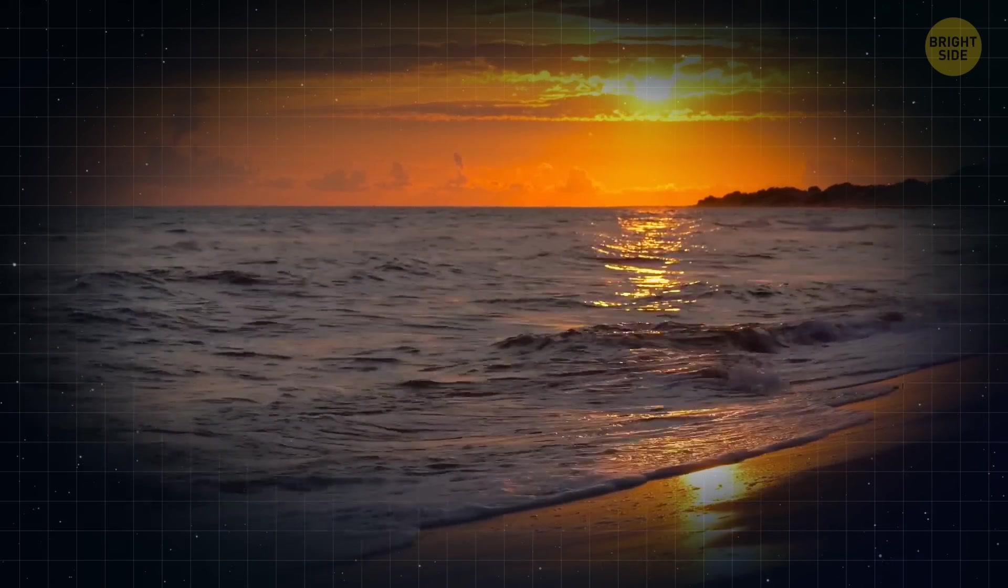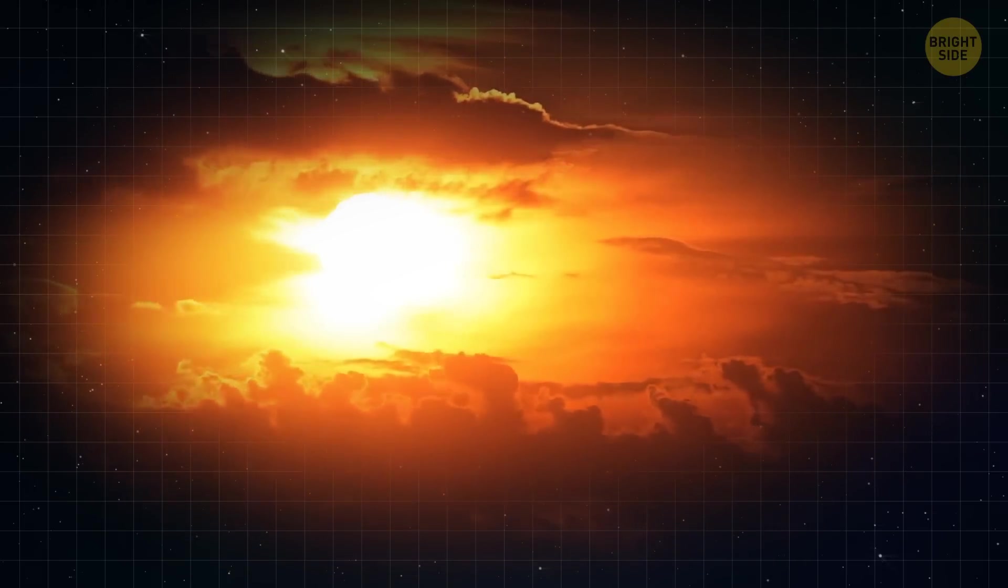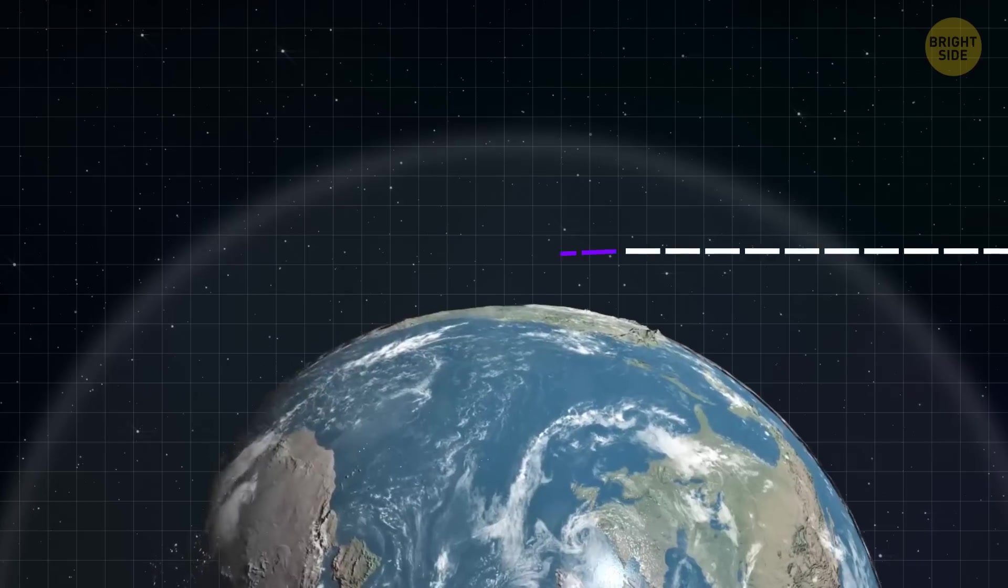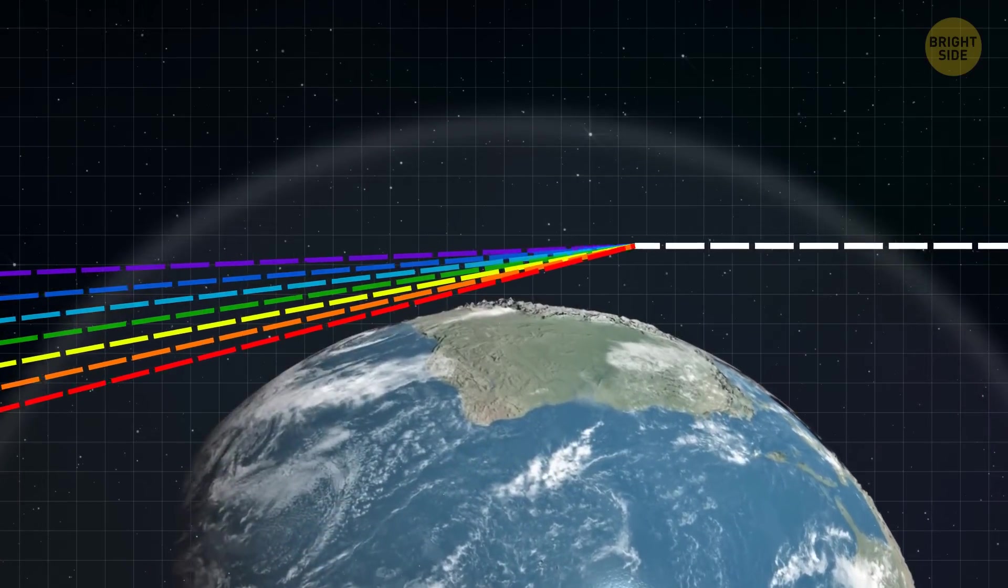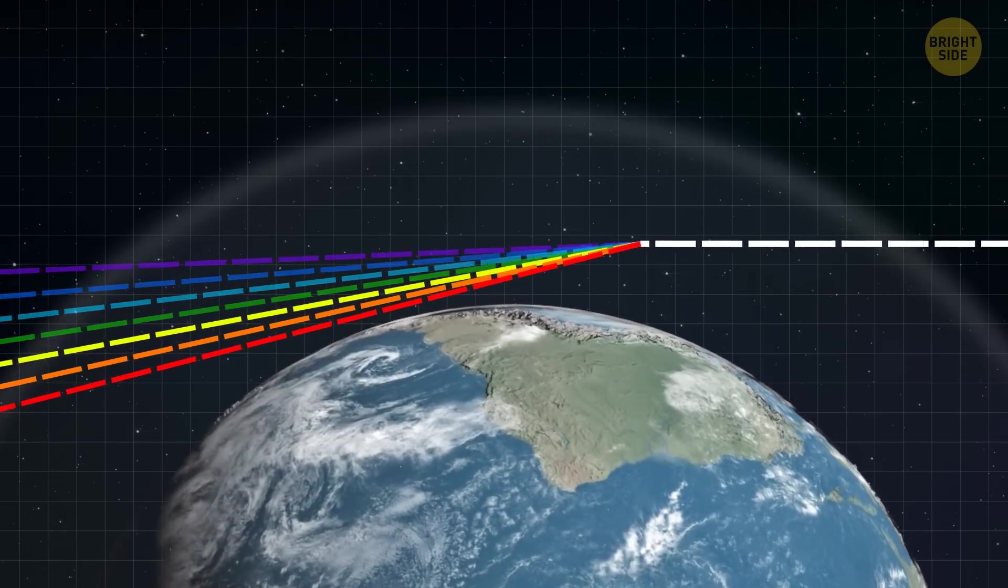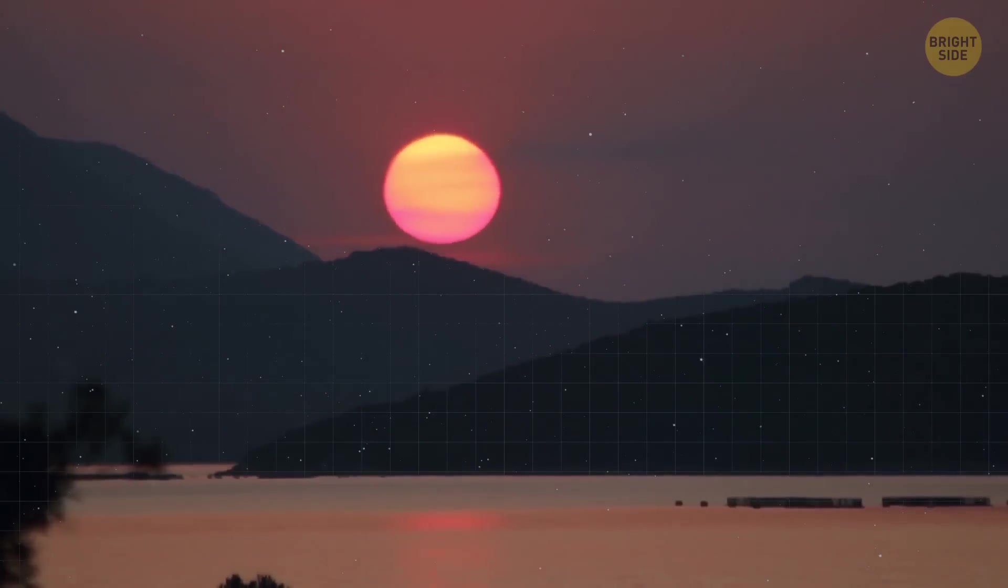And you know how when you look at a beautiful sunset, the sun appears to be this warm, reddish-orange color? Well, that's because when sunlight travels through our atmosphere, it scatters and loses some of its higher-energy, bluish colors, leaving behind the redder ones. So, when light loses energy, it tends to shift towards the red end of the color spectrum.